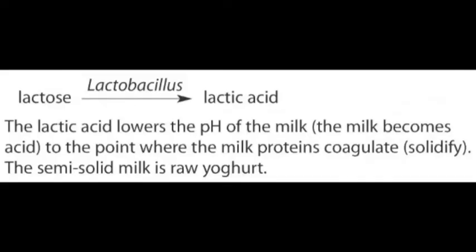To make yogurt, milk is heated to sterilize it, killing any bacteria already present. The milk is then stirred thoroughly to mix its ingredients, and milk protein is added. A starter culture of Lactobacillus bacteria is added to the milk while it is still warm. The Lactobacillus bacteria ferment the sugar lactose in the milk to lactic acid.